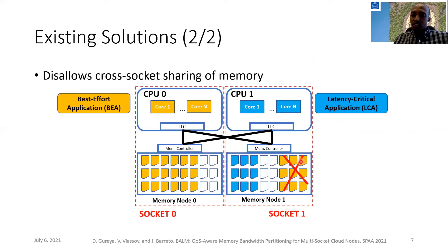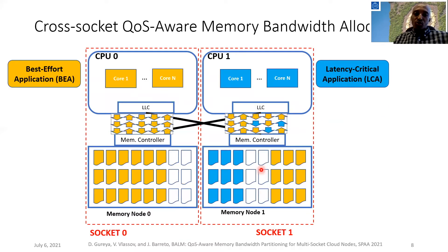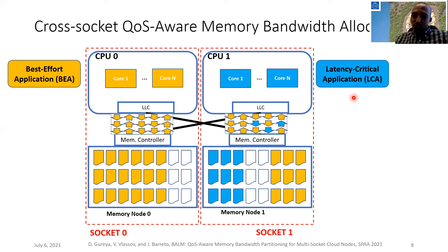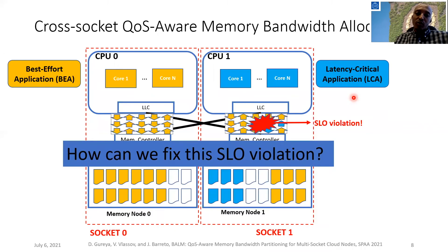Specifically, existing solutions disallow cross-socket sharing of memory, which entails suboptimal use of multi-socket host aggregate memory resources. Cross-socket sharing of memory could also easily lead to performance interference, where the demand that some application places on shared resources such as memory bandwidth could cause performance degradation of co-located latency-critical applications, leading to SLO violations. This raises a crucial question: how can we fix SLO violations due to memory bandwidth contention?